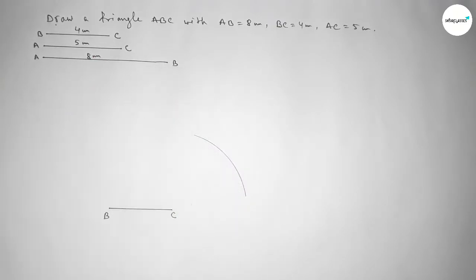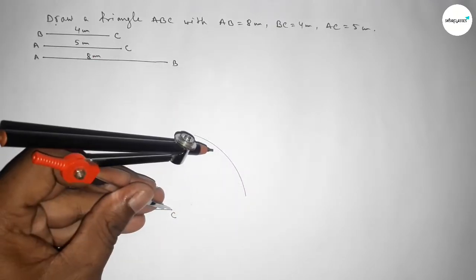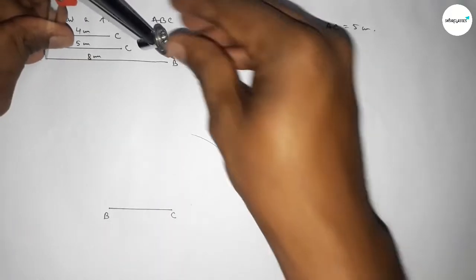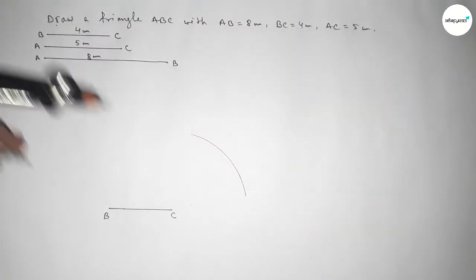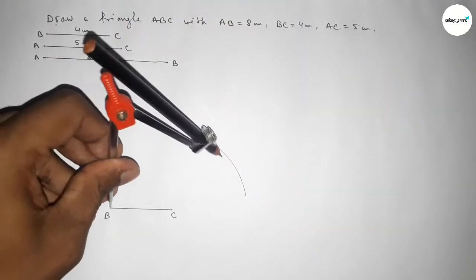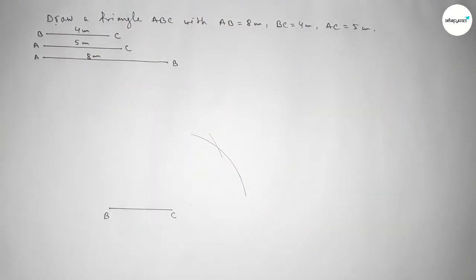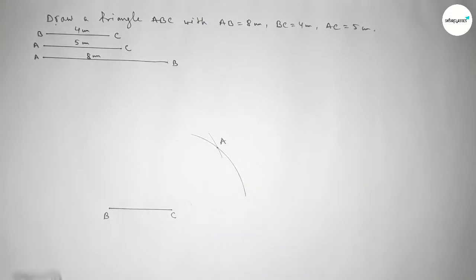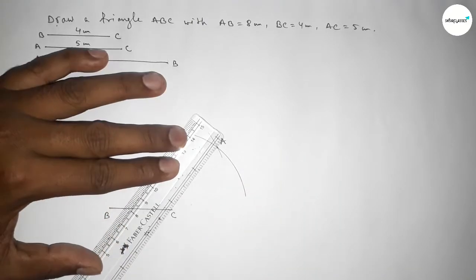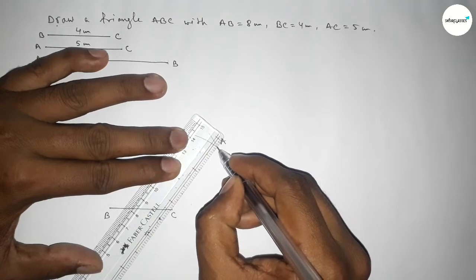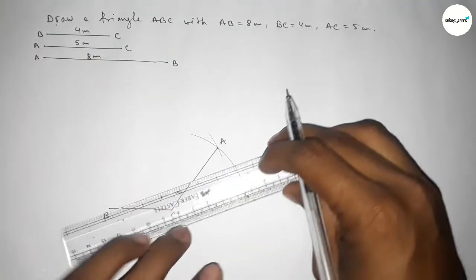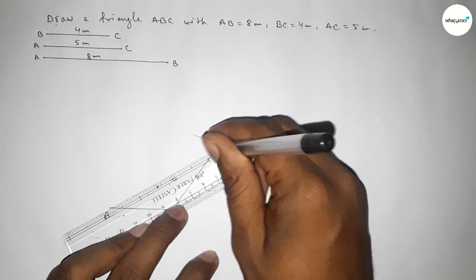Now taking the length AB equal to 8 centimeter using compass, and putting the compass on point B and cutting here. Both curves intersect at point A. Now joining A and C, then joining A and B to get triangle ABC.